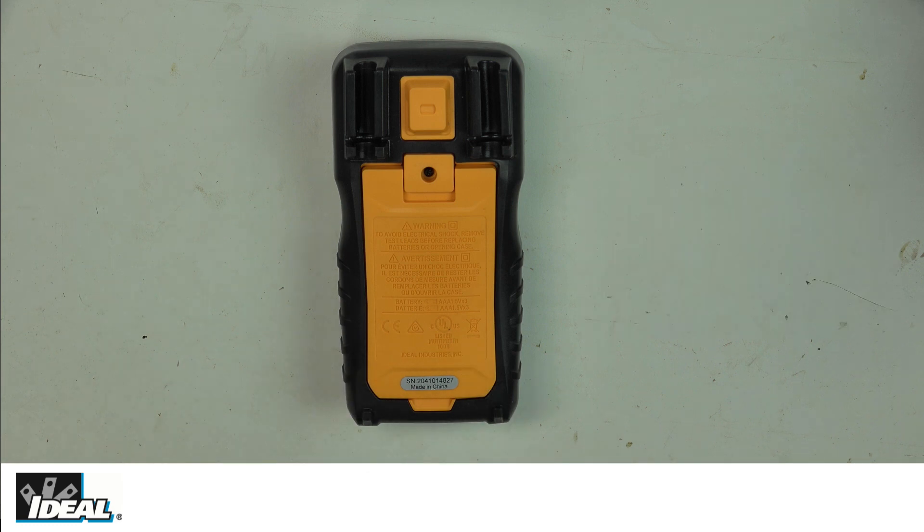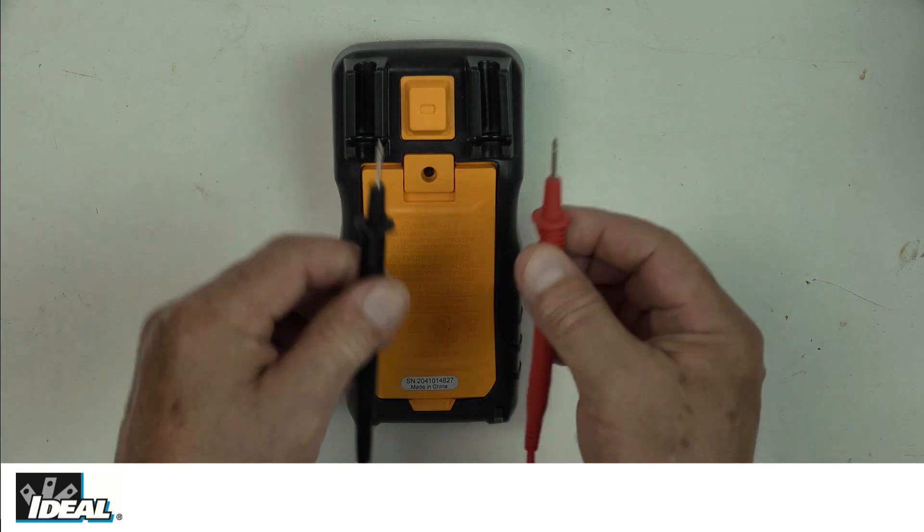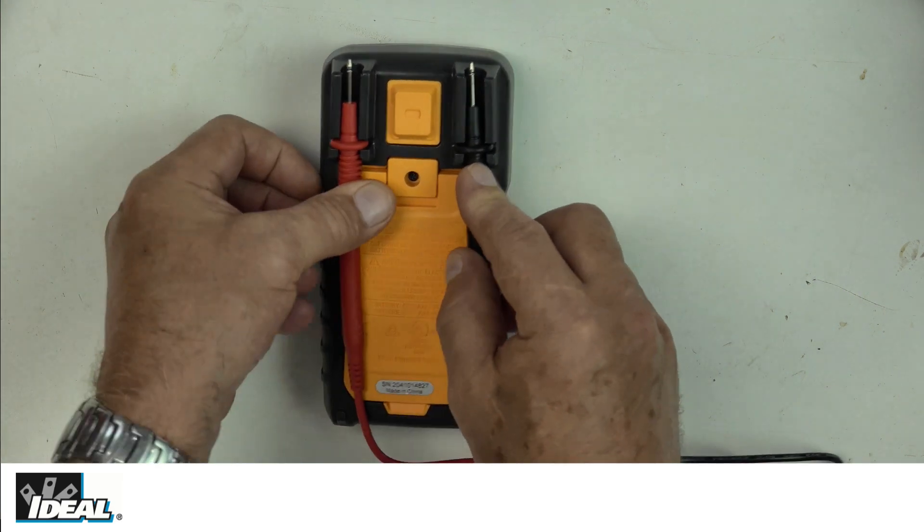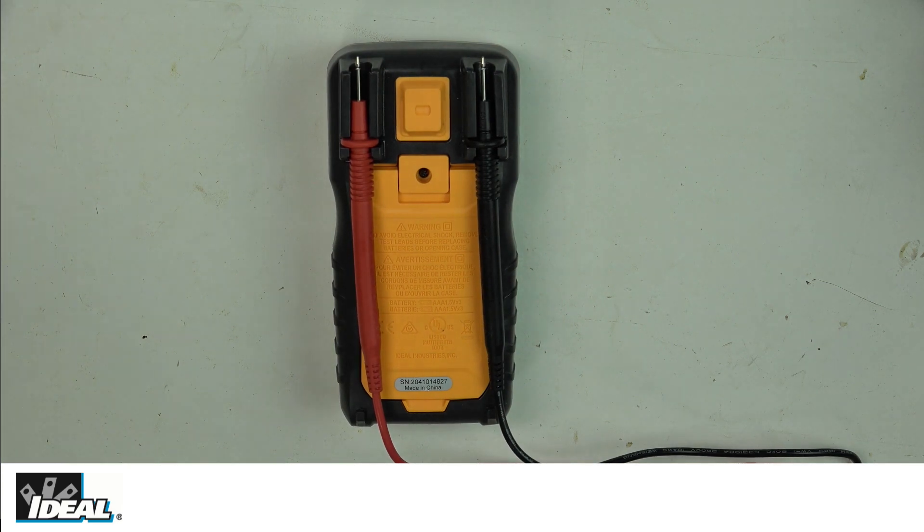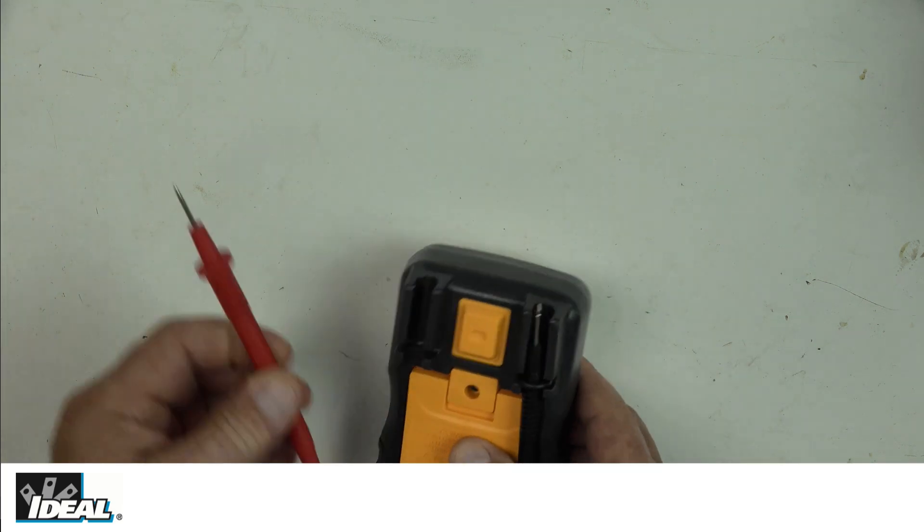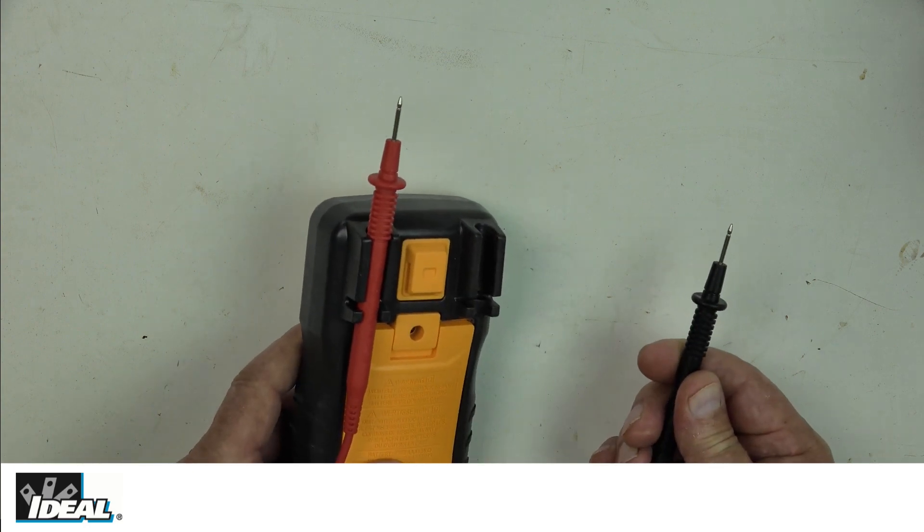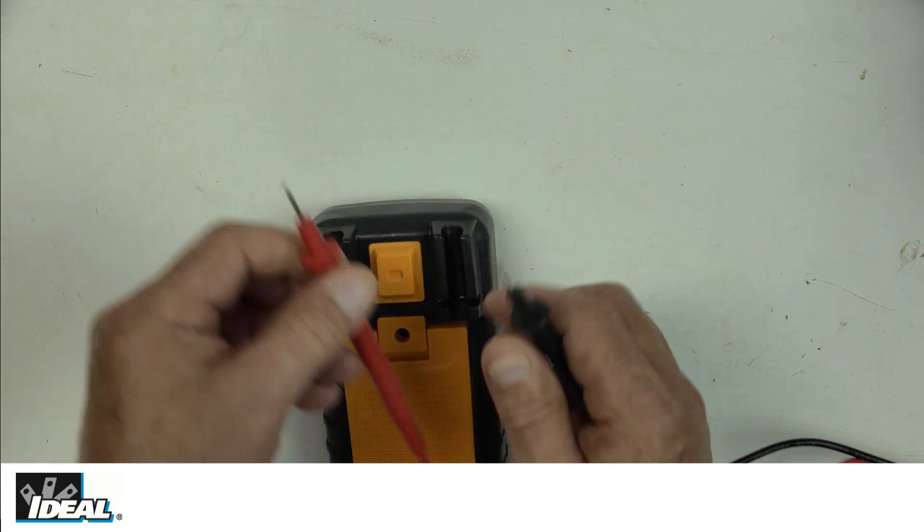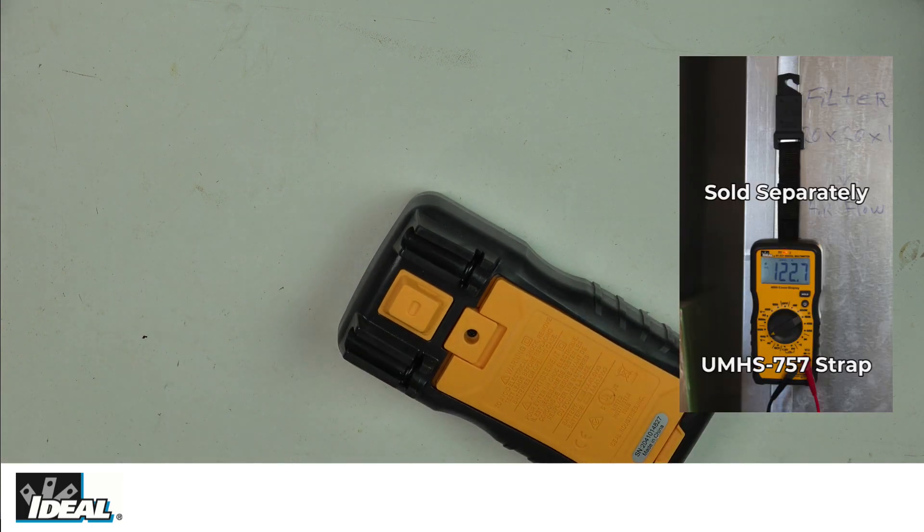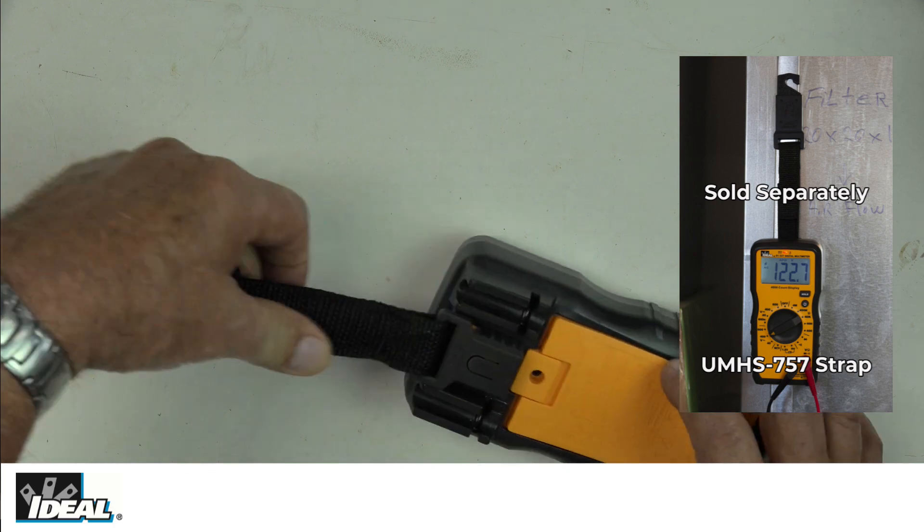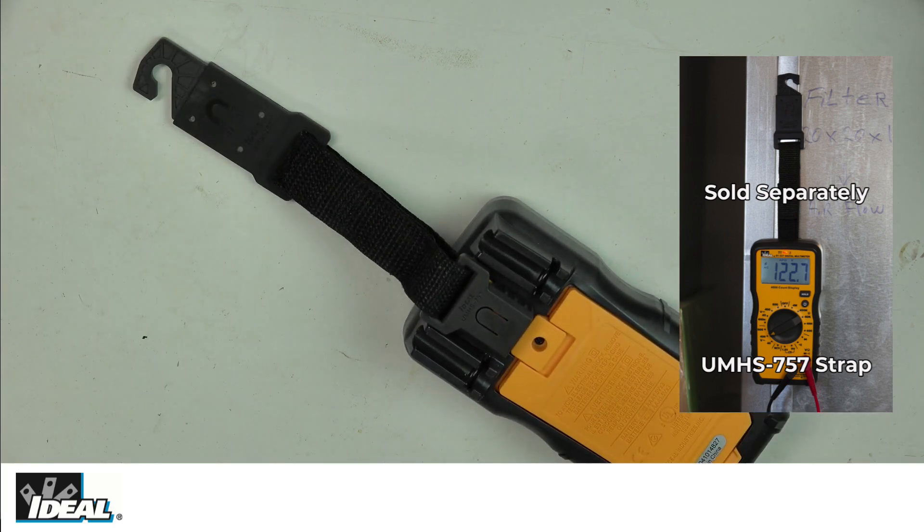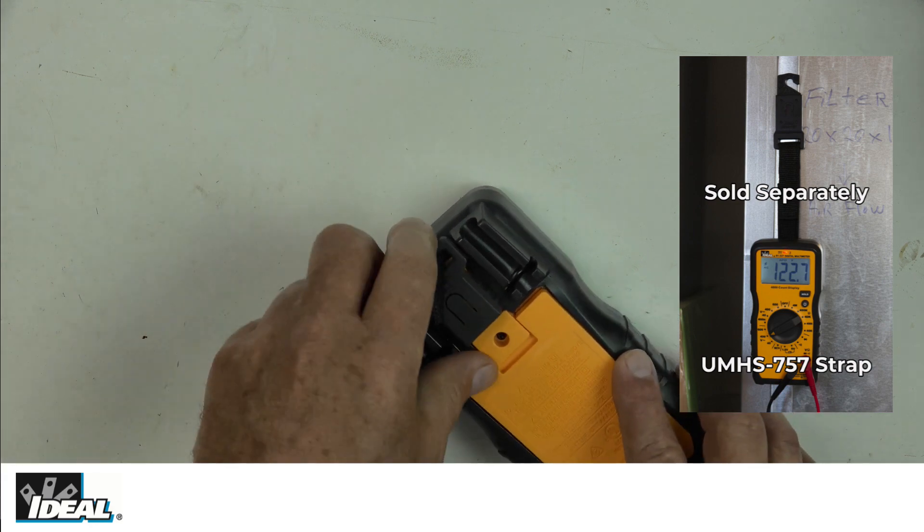The back of the tester also has probe holders where we can store our probes when not using them. You can store them in the higher position as well if you want to do some two-handed testing. You'll also note in the top of the tester is a mount for a hanging strap, which is sold separately, so you can hang the tester from a nail, screw, or magnetic surface.